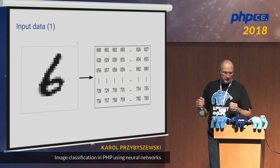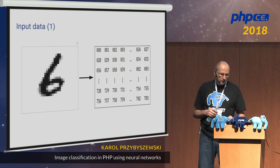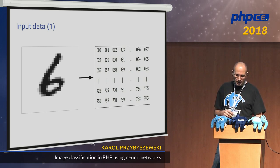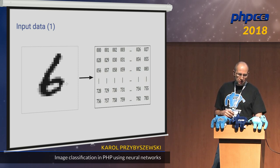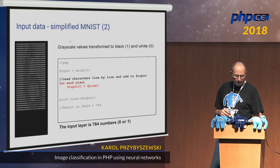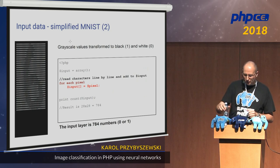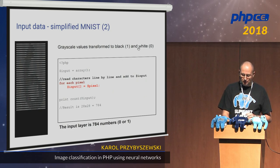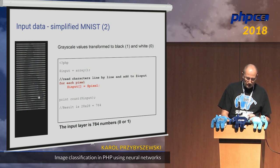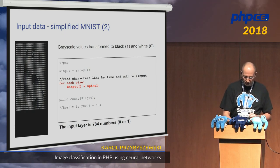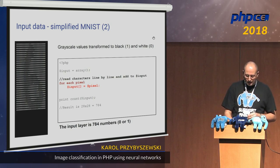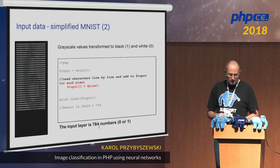Our input data is an image — it's 28 by 28, which gives you an array of pixels. If you count them from zero, you get 783 as the last pixel index. We are going to use a slightly simplified version: not the full grayscale values, but just ones and zeros. For black we use one, and for something close to white we use zero. To read the data, we just read this text file line by line, pixel by pixel, and our input layer is 784 numbers — either zero or one.